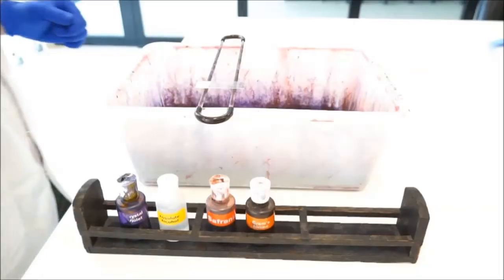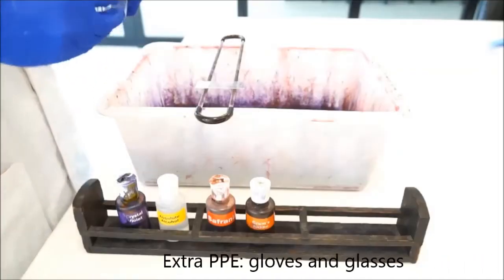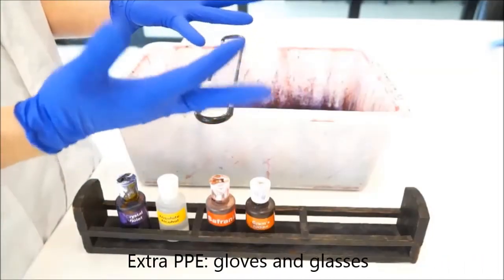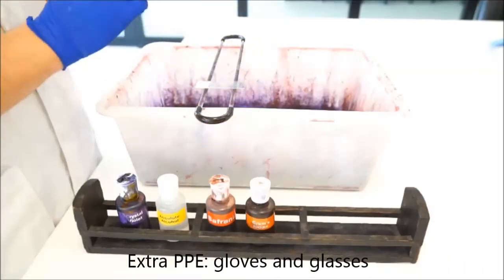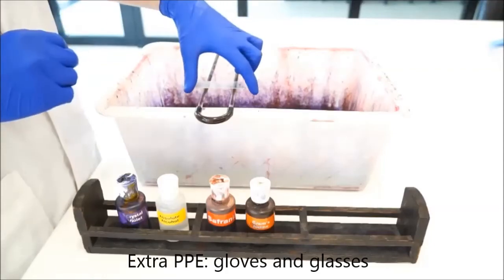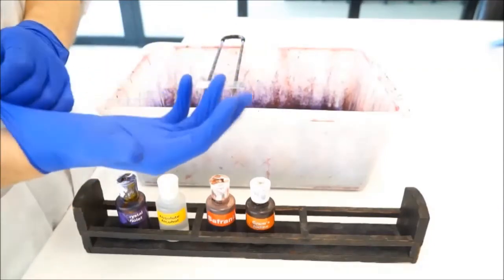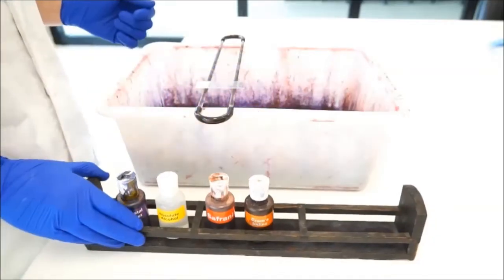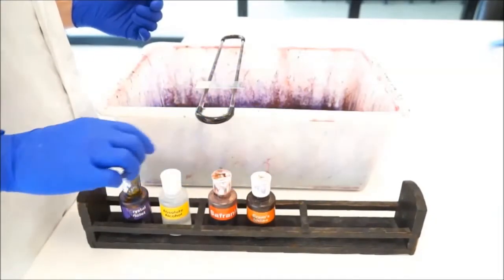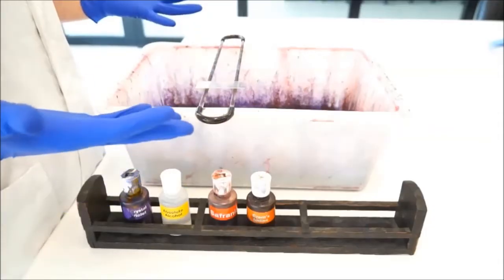At this point you want to be putting on safety glasses—you don't want these stains in your eyes—and also gloves. Previously when you were making the heat-fixed slide, you wouldn't want gloves because gloves and Bunsen burners don't mix. But right now, some of these stains are a little bit toxic, so I'd be wearing gloves.